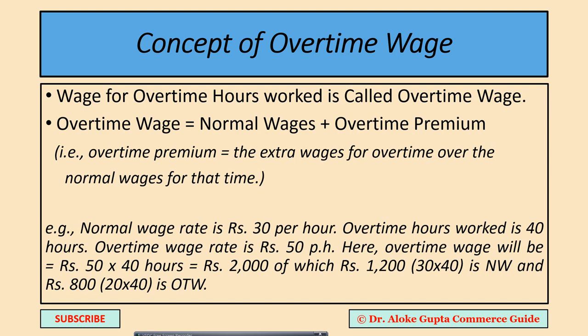As per the Indian Factories Act 1948, a worker is treated as having worked overtime if he actually worked for more than 9 hours in a day — this 9 hours includes recess — or for more than 48 hours in a week. The Act also mentions that the rate of overtime wage should be twice the normal wage rate, though this is not always followed in all concerns. Definitely, it should be more than the normal wage rate.